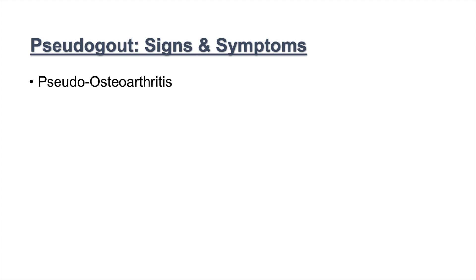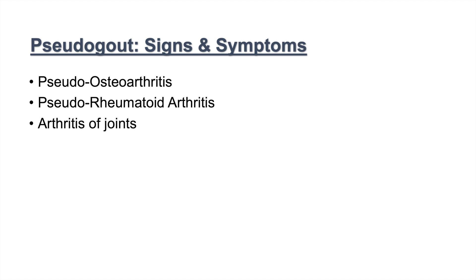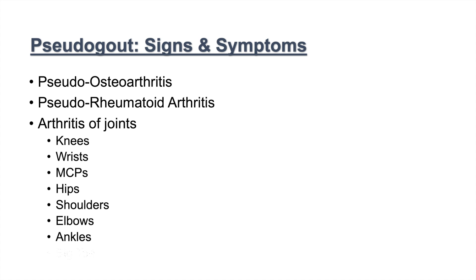Pseudogout can present like osteoarthritis, leading to what we call pseudo-osteoarthritis, or it can present like rheumatoid arthritis, called pseudo-rheumatoid arthritis. Generally, the signs and symptoms of pseudogout involve arthritis or inflammation of the joints, particularly the knees, wrists, MCP joints, hips, shoulders, elbows, ankles, and the big toe. It can affect some of the same joints as gout, like the knees and big toe, but generally can affect other joints as well.